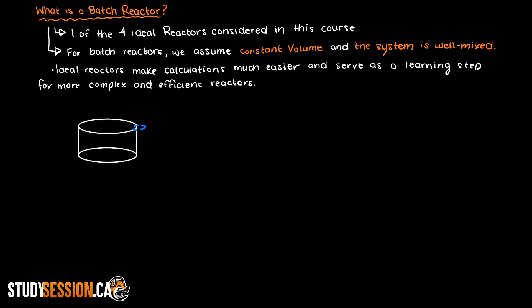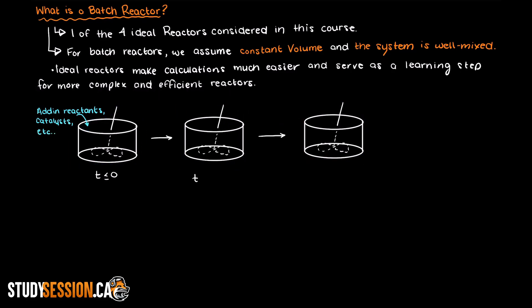So the way a batch reactor operates is by first adding in all our reactants, catalysts, or whatever is needed for our reaction. We then close off the reactor and let it react for a certain amount of time. For example, we could add all our components and if our tank needed to be heated, we would let our tank get to say 50 degrees for 5 hours. After 5 hours we could remove our reactive products.